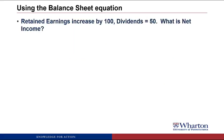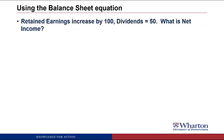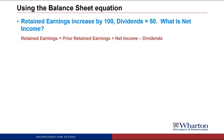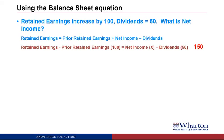Problem 5: Retained earnings increase by 100, dividends equals 50. What is net income? Using the retained earnings equation: retained earnings equals prior retained earnings plus net income minus dividends. We know retained earnings increased, so the difference between the two retained earnings figures is 100. That has to equal net income minus dividends. If dividends are 50, then net income must be 150 to make this balance.